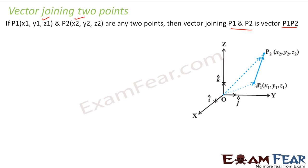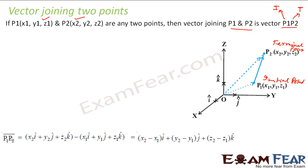Here, p1 is called the initial point and p2 is called the terminal point. So p1 is always the initial point and p2 is the terminal point. When you write p1p2, it is nothing but terminal point minus initial point. Please note: it is always terminal point minus initial point.